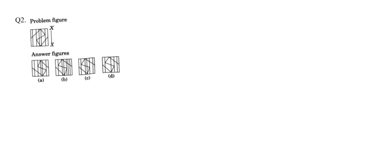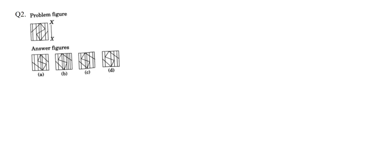Let's move on to the next question, which is on the same direction. Here we have a Z-type structure inside a square with straight lines. In the options, we can see an opposite Z, which is an S shape, in all four options. So the Z won't help us find the mirror image. We need to consider the straight lines. In the right corner, you can see the first one is a thin line and the second one is a relatively thicker line.